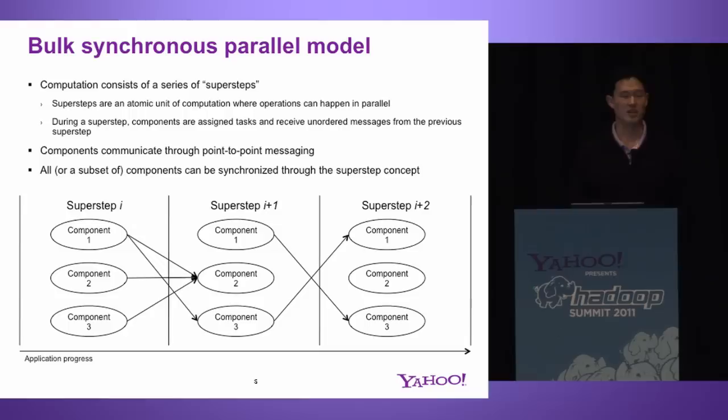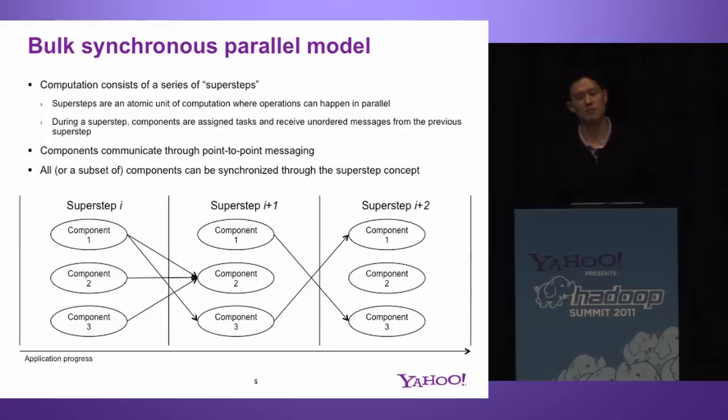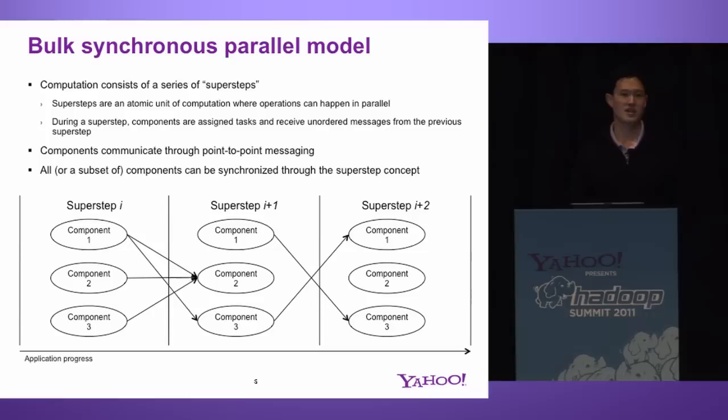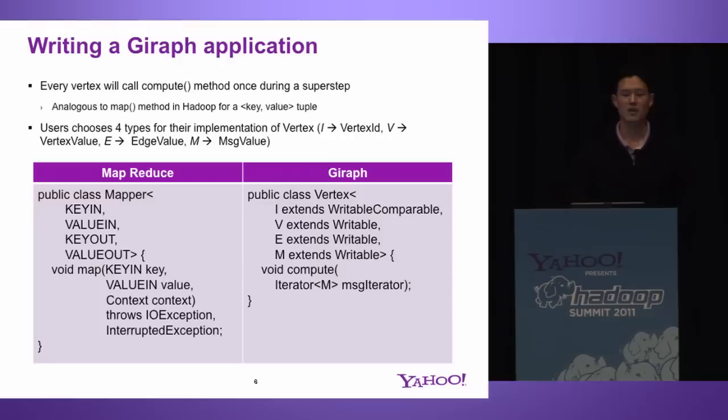BSP is really a way of composing an application as a series of super steps. A super step is just some unit of aggregate computation — a place where a lot of operations can happen in parallel, and it cannot be subdivided. In the generic form, you think of a super step as composed of several components that can send messages to each other during that super step. Those messages are not delivered until the next super step, and the ordering of those messages is not guaranteed — only that you received the message.